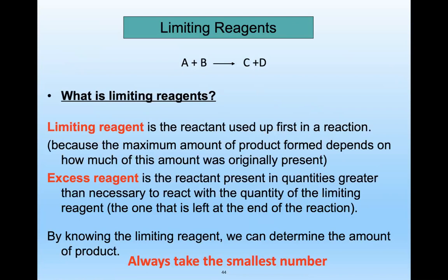The limiting reagent is the reactant used up first in a reaction, because the maximum amount of product formed depends on how much of this reactant was originally present. The excess reagent is the reactant present in quantities greater than necessary — it is what remains at the end of the reaction. By knowing the limiting reagent, we can determine the amount of product — always take the smallest number.